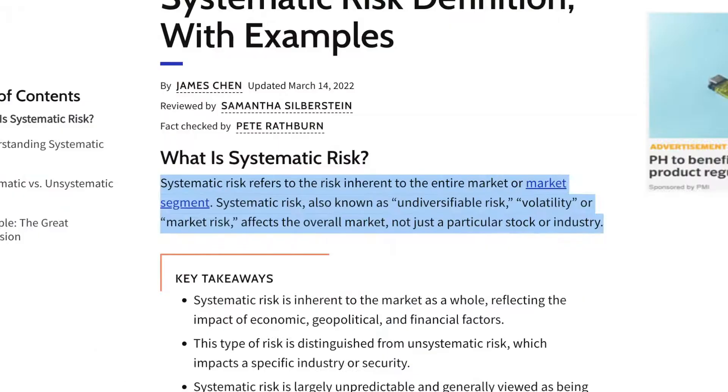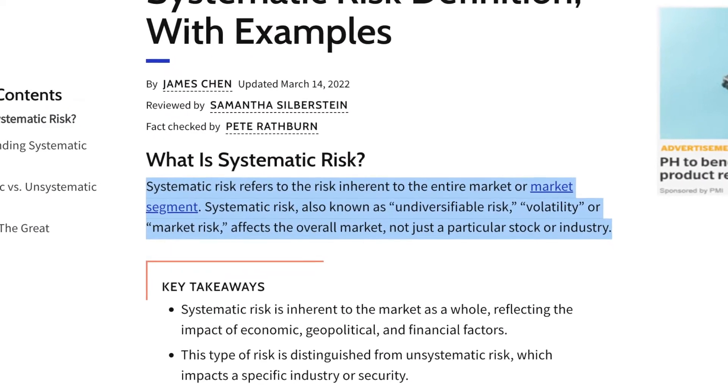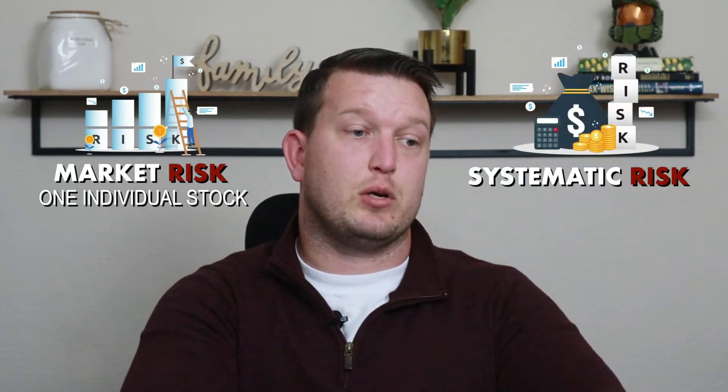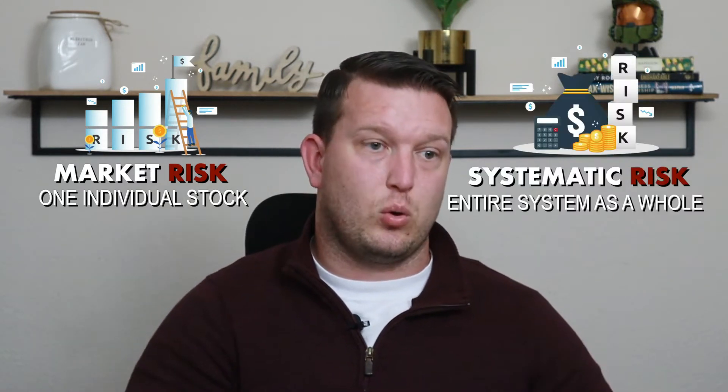But what is systemic risk and why doesn't diversification protect you from it? Systemic risk is the risk of breakdown of the entire system, as opposed to just one individual market within the system. Whereas market risk is one individual stock going belly up, systemic risk is the entire system as a whole going belly up. This is what happens with recessions, depressions, major economic downturns, financial crises, and even currency crises — when these things happen, the entire system is at risk.